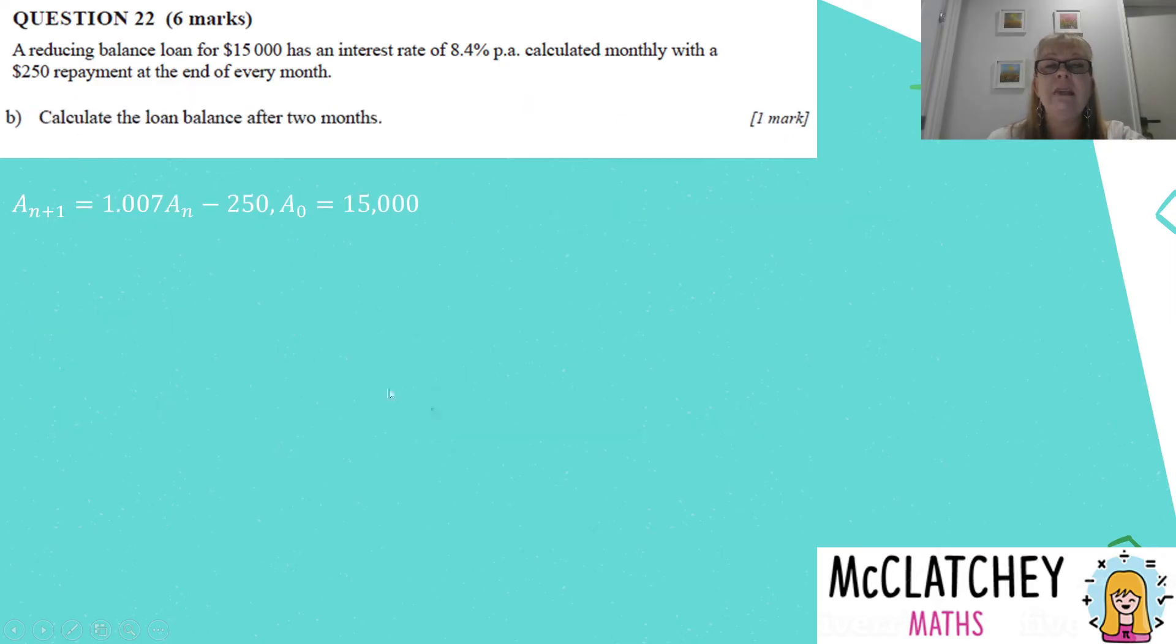We're on to part B. Now we need to use this recurrence relation that we just created to calculate the loan balance after two months. So we're going to be substituting in to find the amount at time 1 and then the amount at time 2. So at time 1, I've got 1.007 times the amount invested $15,000, take away $250 and I'll get the amount after one month of the loan balance is $14,855. Now I just need to repeat that process by now substituting this into the formula where it says A sub n. So A2 will be 1.007 times the amount of the loan, take away $250 the repayment and my balance after two months is $14,708.99.